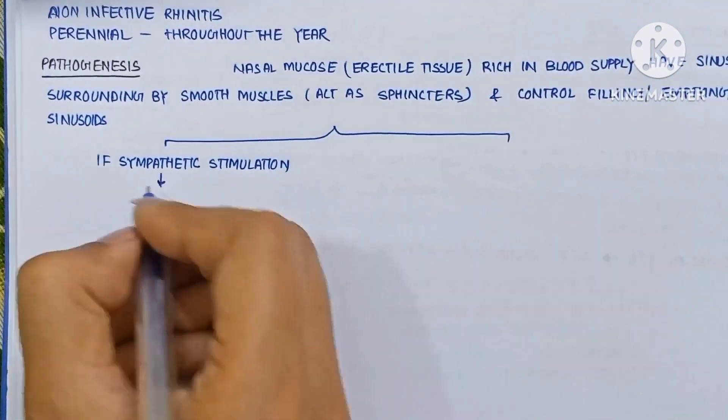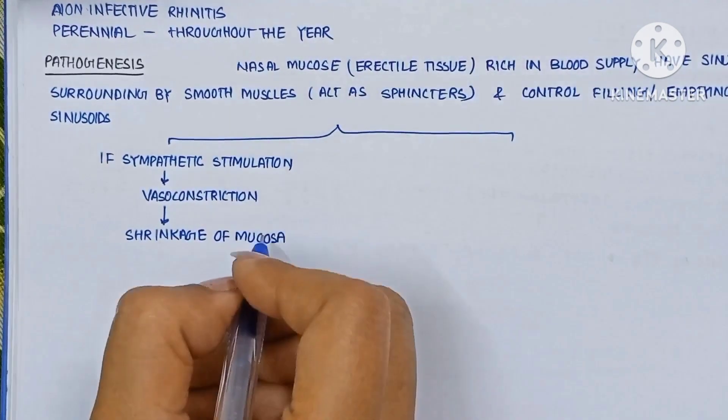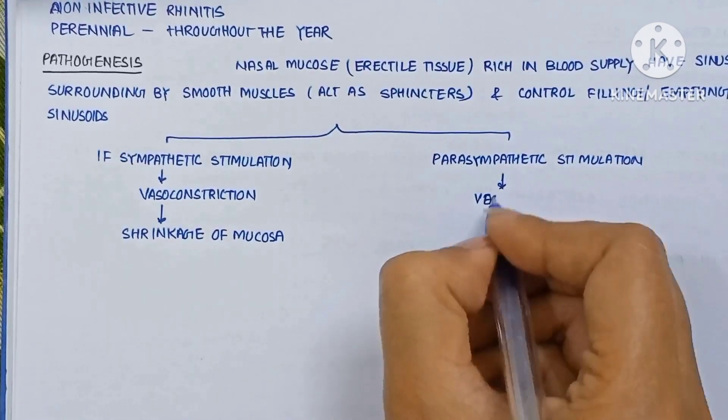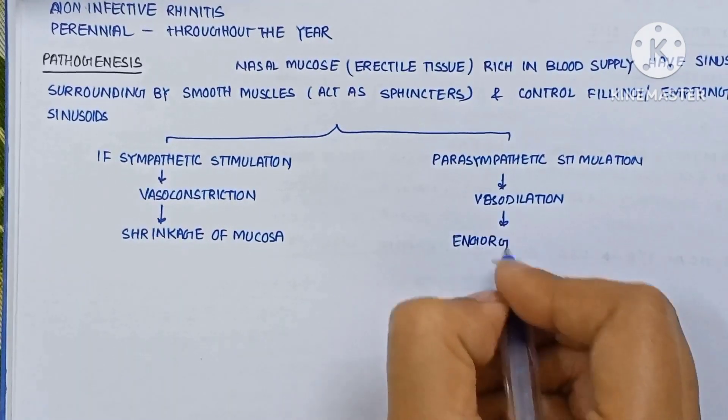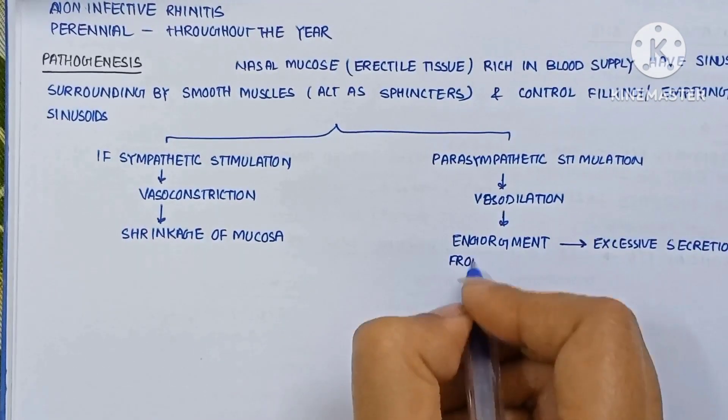If sympathetic stimulation occurs, vasoconstriction causes shrinkage of the mucosa. And if parasympathetic stimulation occurs, vasodilation causes engorgement which leads to excessive secretion from the nasal glands.